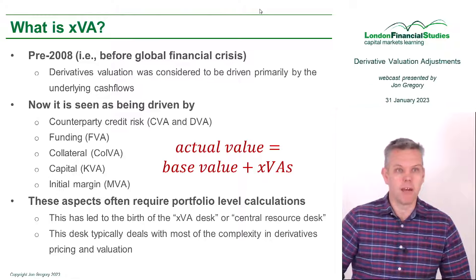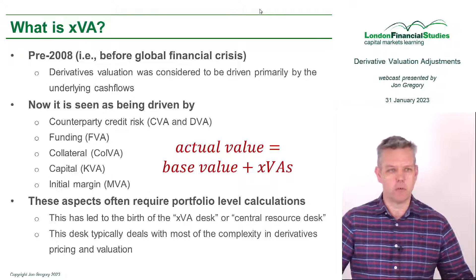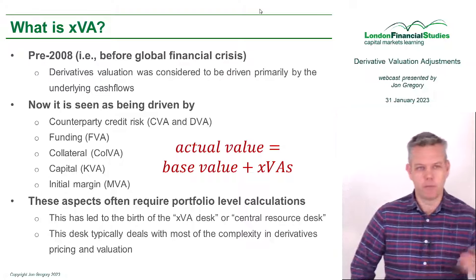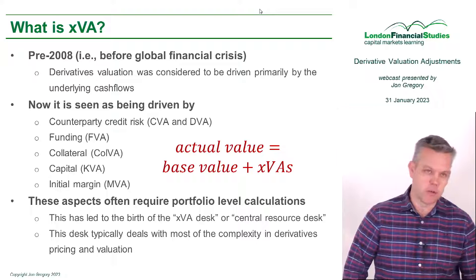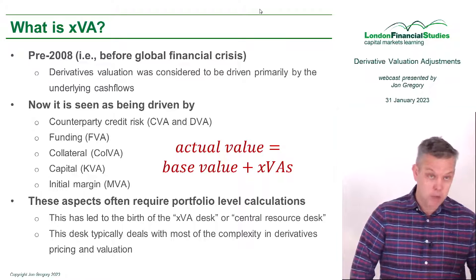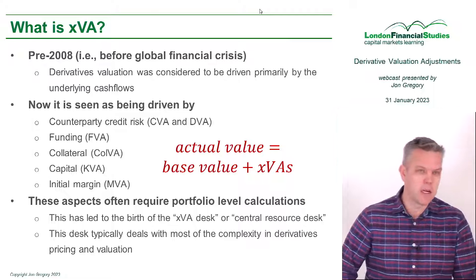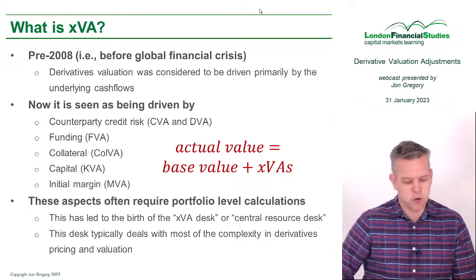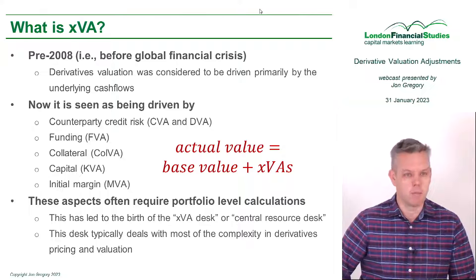Going back, you would never ask yourself: what's the collateral agreement? I need to know about the collateral agreement before I do the valuation. But nowadays, that's seen as a very important thing. Capital, often known as KVA. And finally, initial margin, often described as MVA or sometimes IMVA.